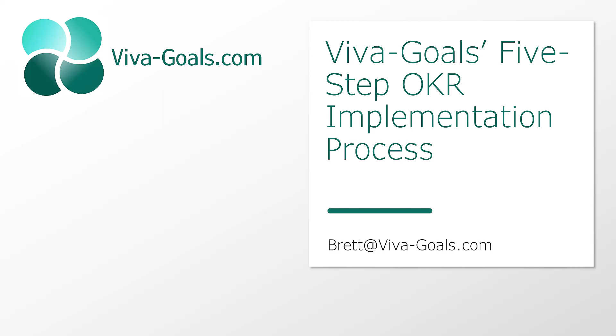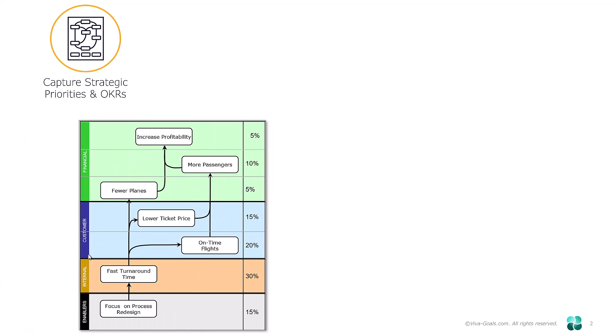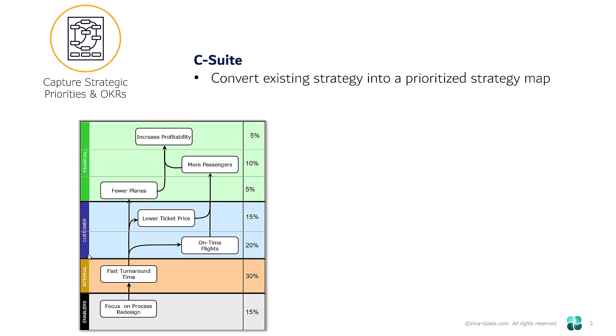The five steps are a bit like this. Step one is actually preparation — let's harvest your existing documents. The first on-site work is a workshop to capture your strategic priorities and objectives, and the output of that is going to be a strategy map. A strategy map, based on our work back in the Balanced Scorecard world, tries to capture the cause-and-effect relationship between your objectives. This is typically built by the executive committee and it's converting your existing strategy into this prioritized strategic hypothesis.